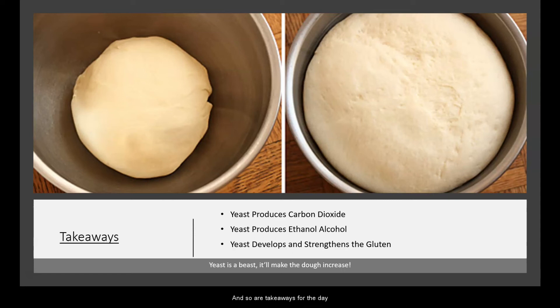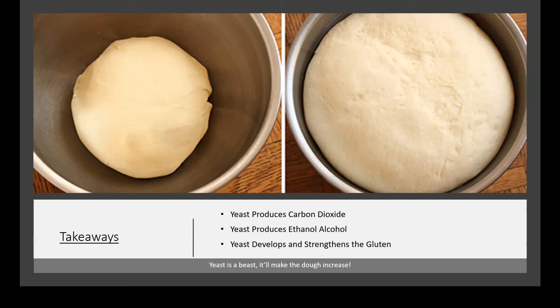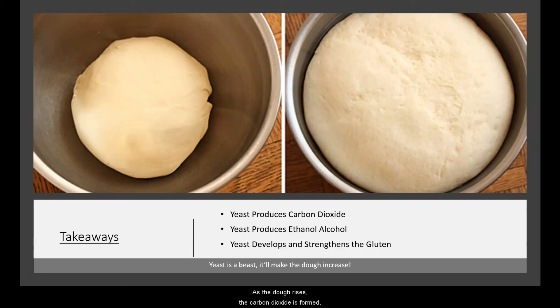Our takeaways for the day: yeast produces carbon dioxide, which is one of the major gases responsible for the rising — the leavening — in baking. In bread making, the yeast organisms drive out carbon dioxide as they feed off of the sugars. As the dough rises, carbon dioxide is formed, and this is how the dough volume increases.